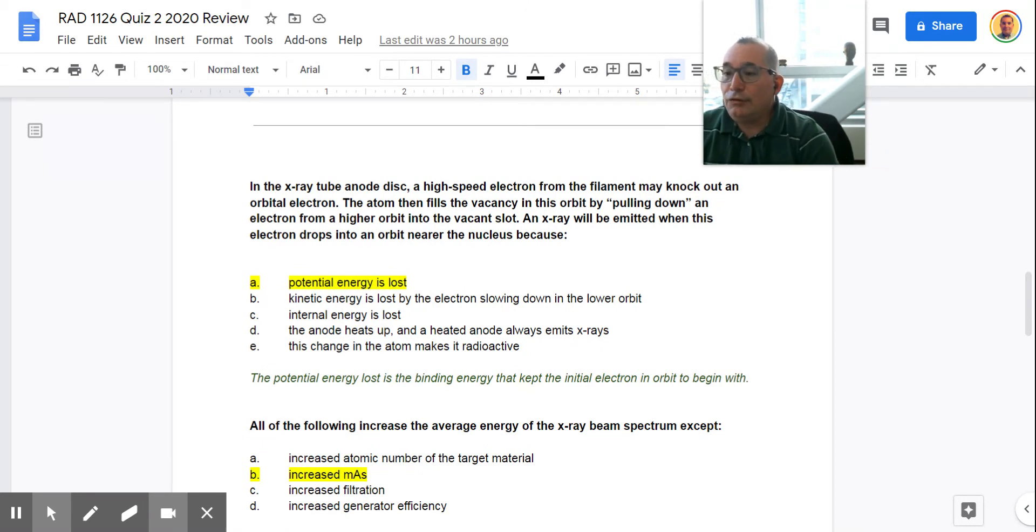In an x-ray tube anode disc, a high-speed electron from the filament may knock out an orbital electron. This is sounding very much like characteristic, correct? The atom then fills the vacancy in this orbit by pulling down an electron from a higher orbit into the vacant slot. This is exactly what we were talking about before. An x-ray will be admitted when this happens. That's characteristic x-ray.